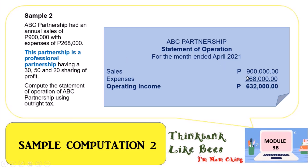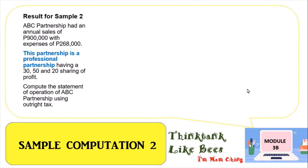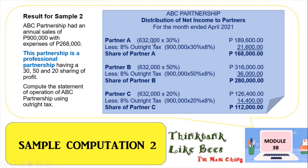Again, you compute 900,000 minus 268,000 to get the operating income basis of 632,000. The distribution to Partner A — who has 30 percent — is 632,000 times 30 percent equals 189,600. The outright tax is computed as: 900,000 times 30 percent times 8 percent, giving an outright tax of 21,600. So Partner A will receive 168,000 after the outright tax.